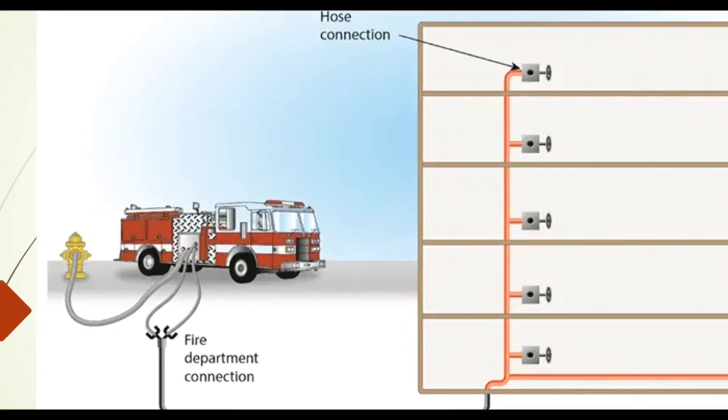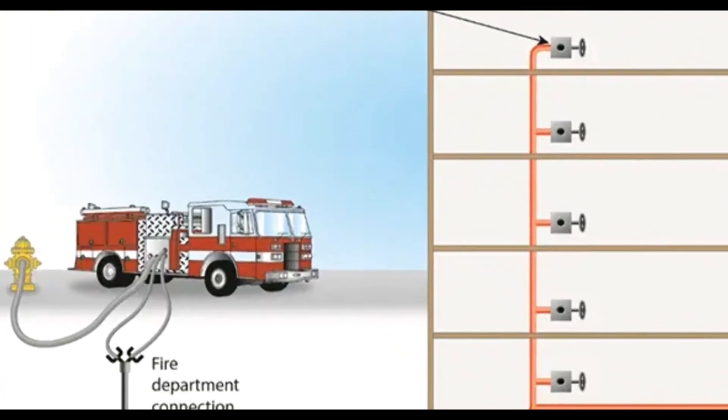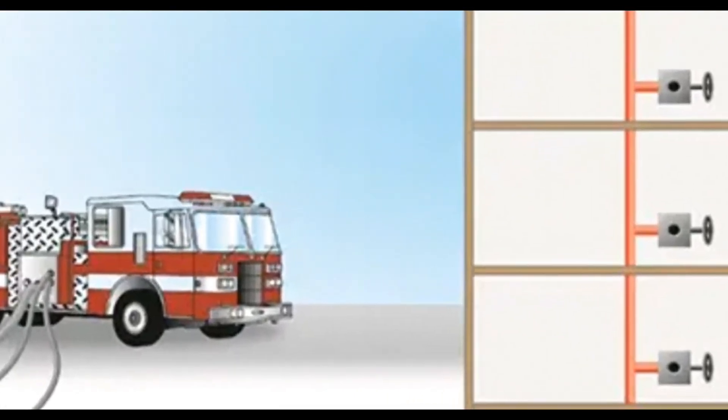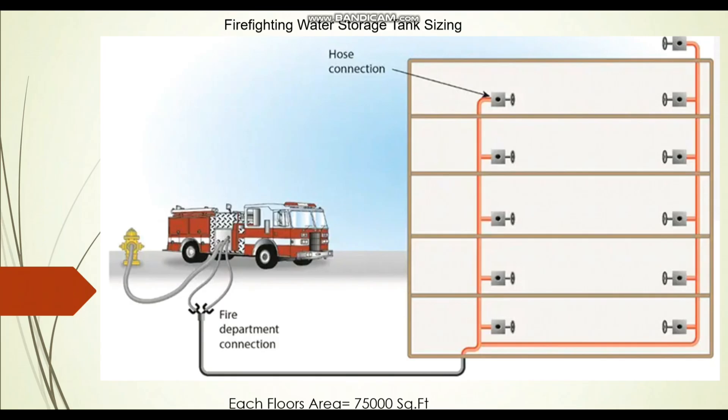Hello friends, welcome back. In today's video we are going to see firefighting tank design for a tank pipe system. We have a G+4 building with two risers, each riser having a 2.5-inch landing valve. First we will see how to find the fire pump flow for this arrangement, then we will go for the tank sizing.